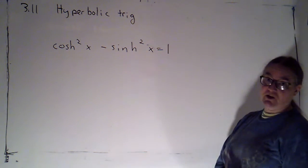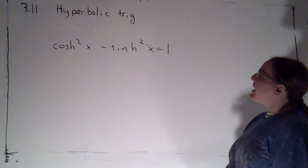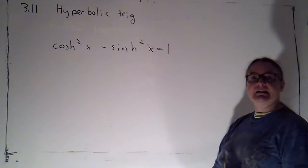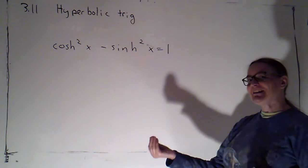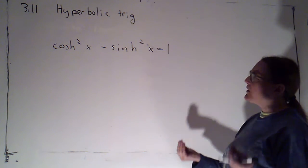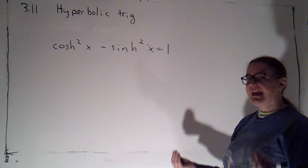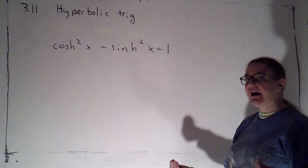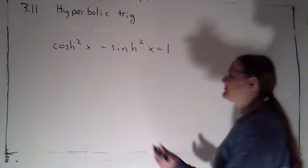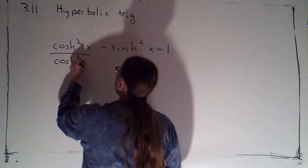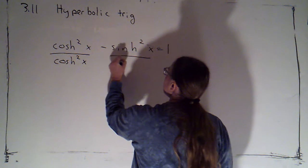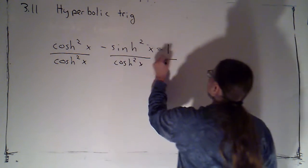Well the same trick works here. If I want to get to the version of the identity that gives me a relationship between tanh squared and sech squared, I want to say what do they have in their denominators? Tanh and sech both have a cosh in the denominator. So I'm going to divide through by that denominator squared. I'm going to divide through by cosh squared of x.